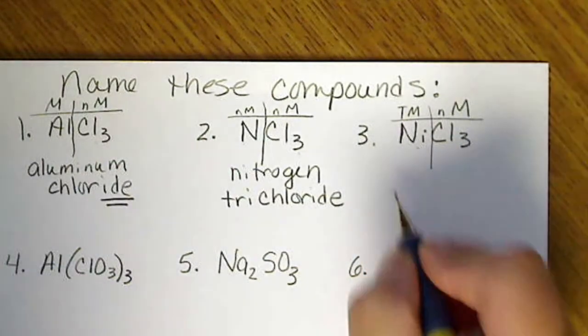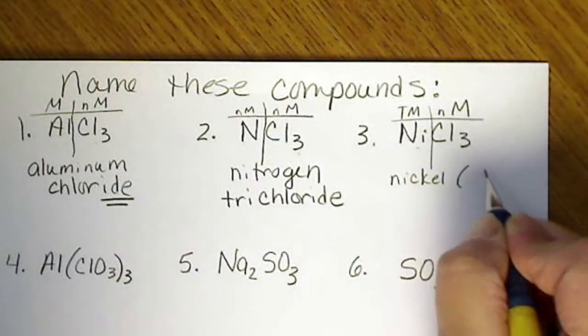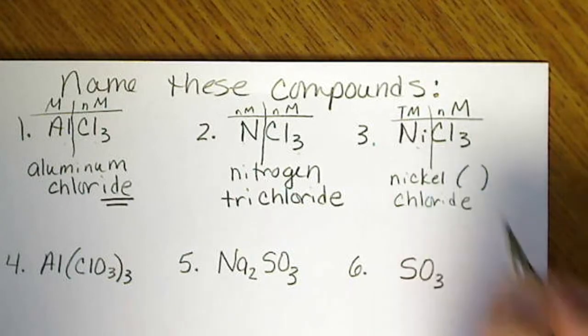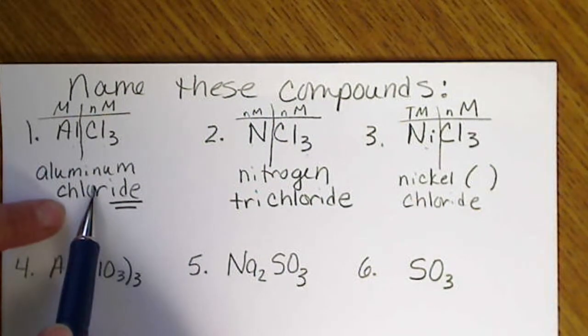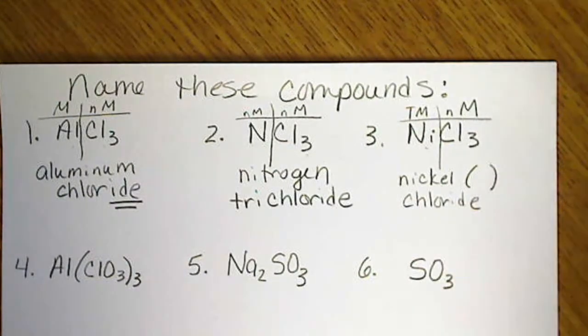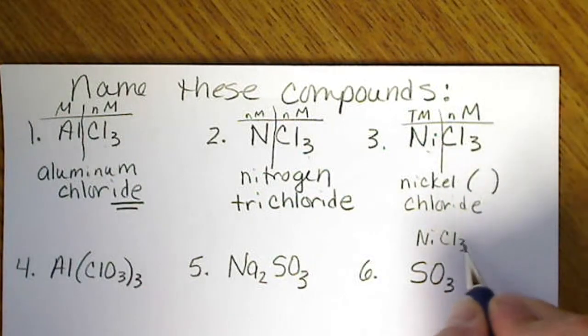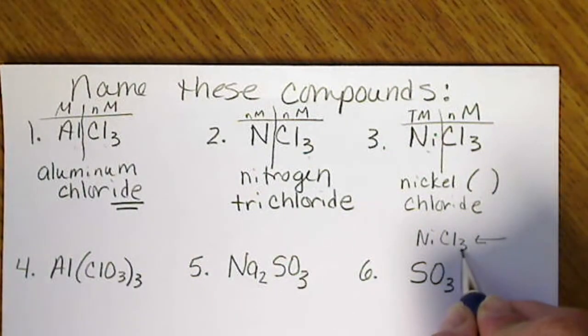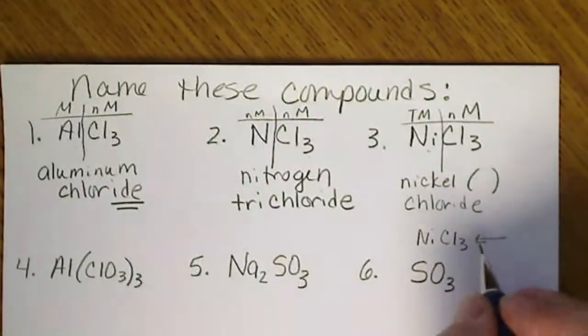So this is nickel something chloride. For a metal and a non-metal, we name the metal and the non-metal. This metal requires a Roman numeral. We have to look at this and figure out what the charge is. We use the charge on chloride. Again, chlorine is in the minus one column.